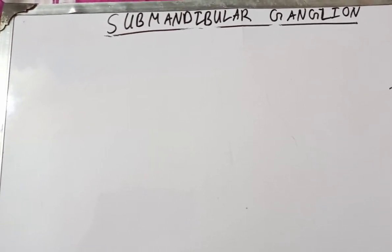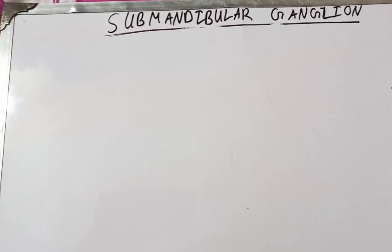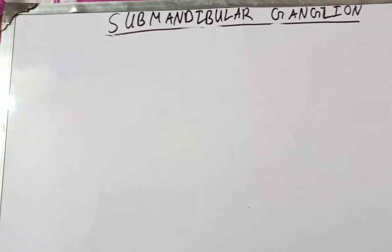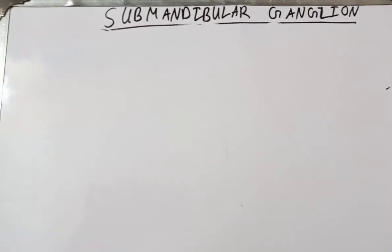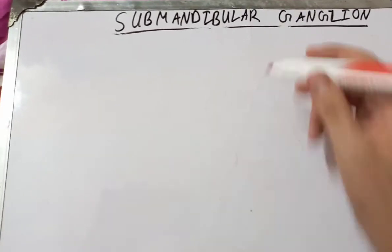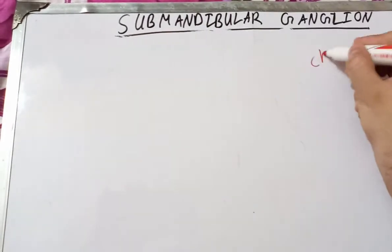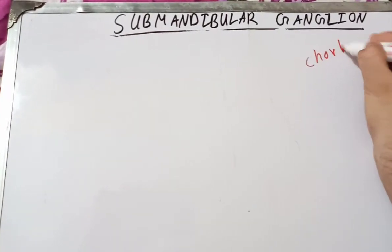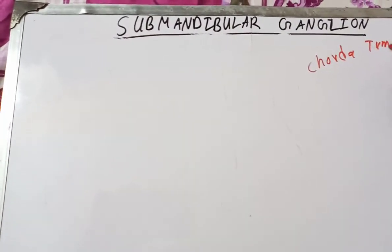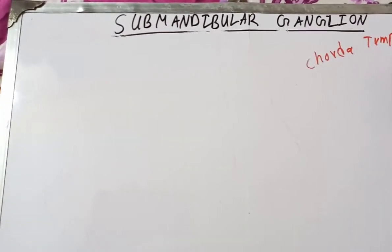Functionally, the submandibular ganglion is related to the chorda tympani branch of the facial nerve, which means that the fibers of the chorda tympani branch of the facial nerve relay here — only the fibers of the chorda tympani branch.